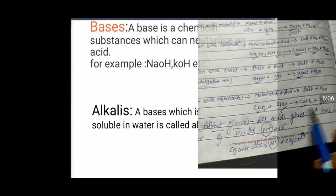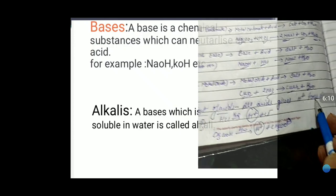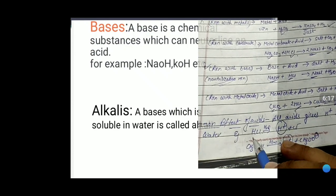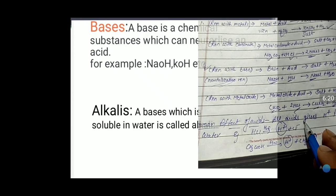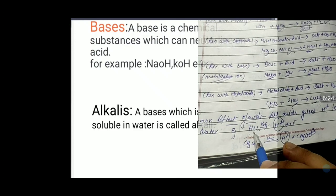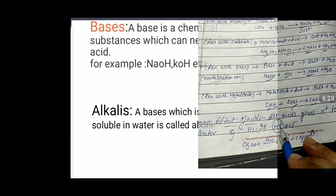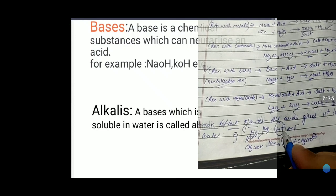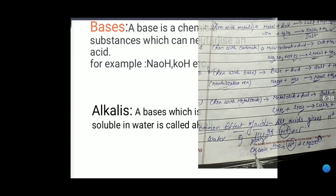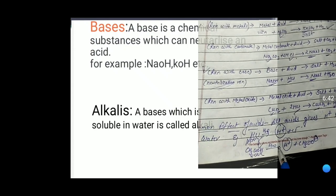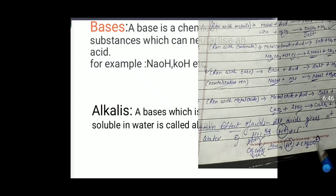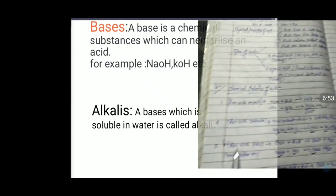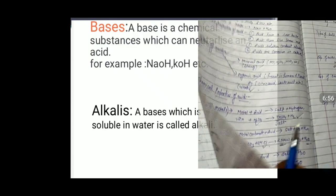A very important common property of all acids: all acids give H⁺ ions when dissolved in water. For example, HCl (a strong acid) dissociates into H⁺ and Cl⁻ in water. In the case of weak acids, they also give H⁺ ions in water. So whether strong or weak, all acids produce H⁺ ions when dissolved in water.